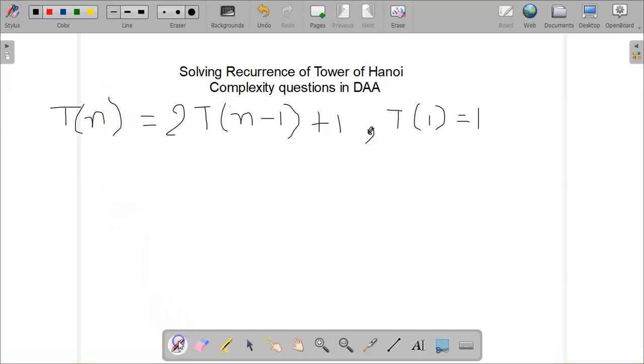Tower of Hanoi has a recurrence relation as shown here: T(n) = 2T(n-1) + 1, and T(1) = 1.